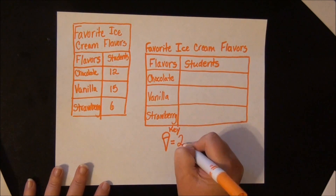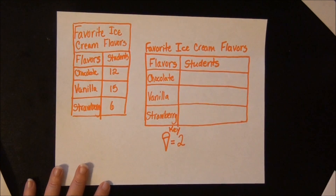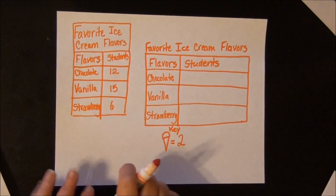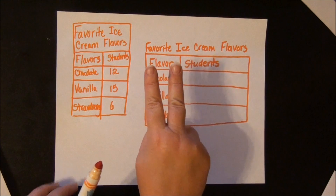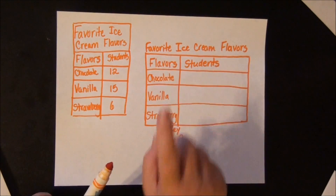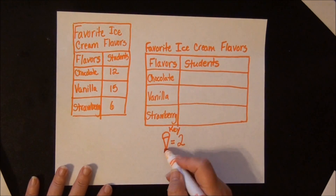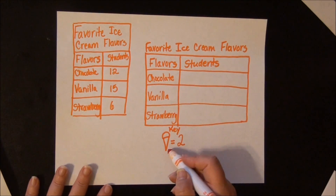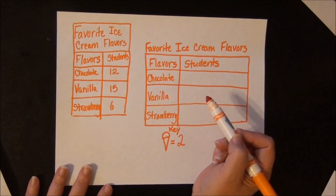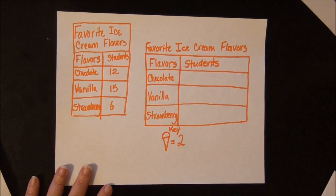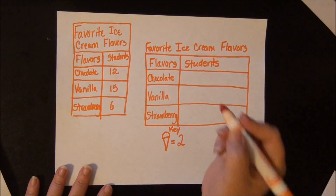So for chocolate, I have 12 students who like chocolate. If I count by 2s: 2, 4, 6, 8, 10, 12 — that's 6 symbols. I can also think of it like division: 12 divided by 2 equals 6, or 2 times 6 equals 12. So I'm going to draw 6 cones.